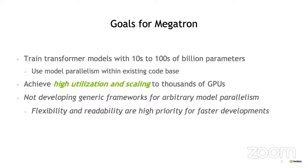Our goal with Megatron is to use model parallelism to train transformer-based models that are billions of parameters. We wanted to have a low barrier of entry and the ability to build on top of our codebase. So instead of developing a generic framework that applies model parallelism to an arbitrary model, we applied model parallelism directly to an existing codebase. The result is that we can achieve high utilization and scale well for thousands of GPUs with a codebase that is really flexible and readable. This makes it possible to integrate well with other frameworks like DeepSpeed with minimal code changes.